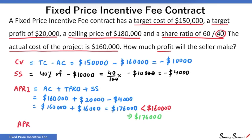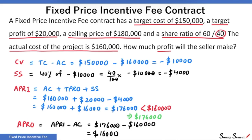Actual profit is simply actual price minus actual cost — that is $16,000. With this, we have solved the problem. Still, for better understanding of FPIF contracts, let's compare the actual price and profit to the target values. The seller got a profit of $16,000, while the target profit was $20,000 — the seller ends up with $4,000 less than that.